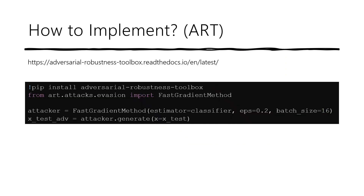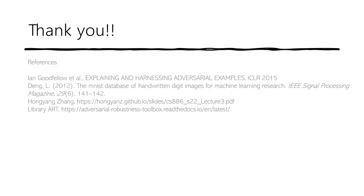How do we implement it? You can implement it yourself using the equation you just learned, or you can simply use a library that is already implemented for you. One of the most popular ones is called ART — A-R-T — Adversarial Robustness Toolbox. You can install it using pip and simply call the fast gradient method on your classifier model. I hope you now understand how the FGSM algorithm works. That's all for today — thank you very much.